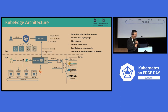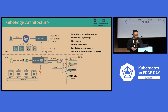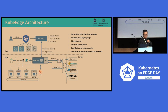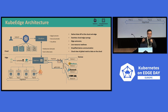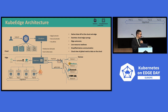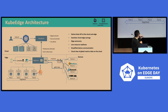Next, I will introduce the KubeEdge community. KubeEdge is a project built based on Kubernetes. We think KubeEdge is not a distribution of Kubernetes — it's not just enhancements based on Kubernetes. From the architecture, you can see KubeEdge includes three parts: the cloud part, edge part, and the device part.